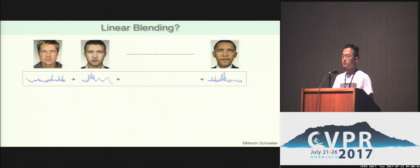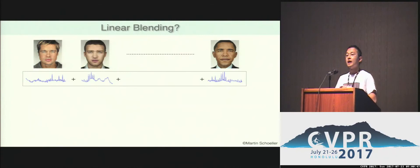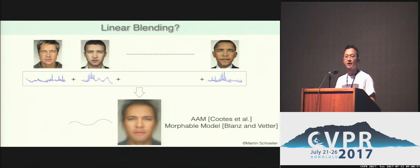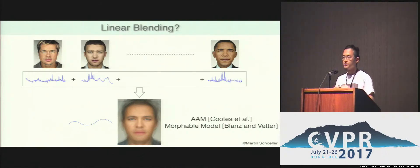One common approach would be to use linear blending, such as PCA, by assuming facial texture lies in a linear subspace of the facial texture database. This allows us to model low-dimensional properties, such as Lambertian Albedo. However, as you can see, all high-frequency details are gone, because the high-frequency details may not appear in the same location.